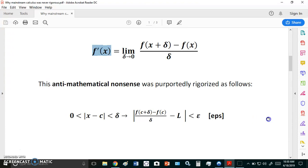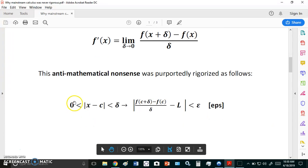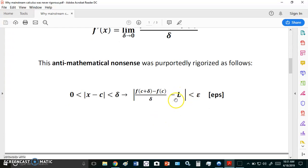This anti-mathematical nonsense was apparently rigorized as what you see here in front of you. Now this finite difference here is simply an expression which supposedly gets closer and closer to L. But of course you need to know L. Otherwise how can you use this definition or verification at all?